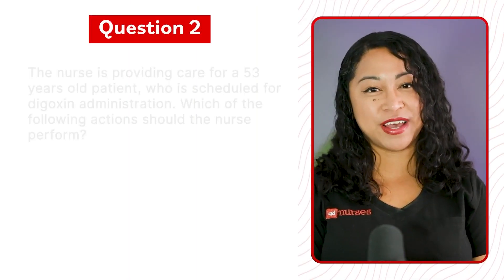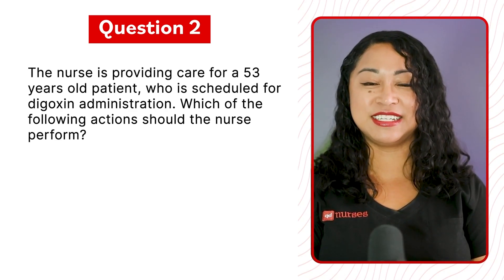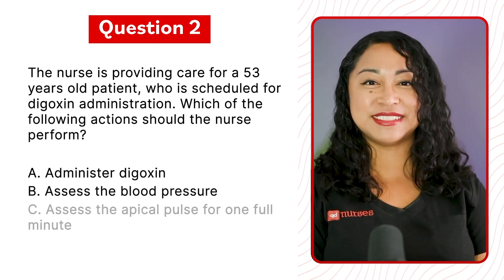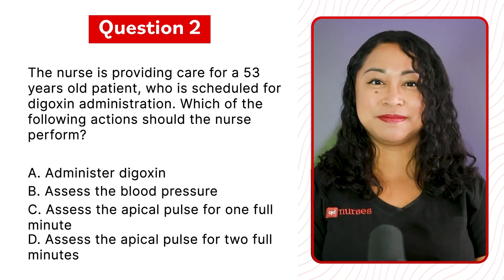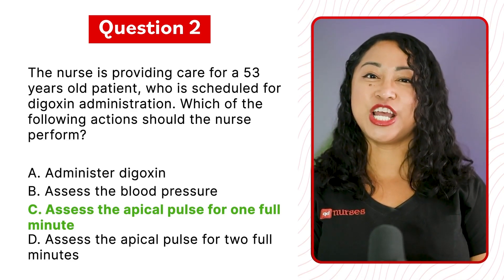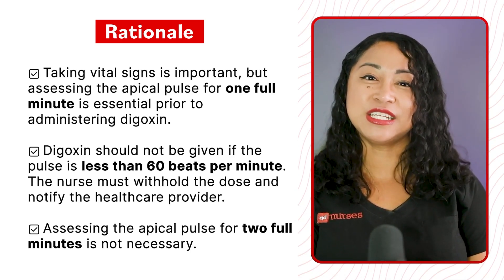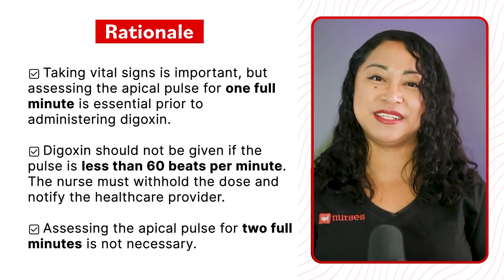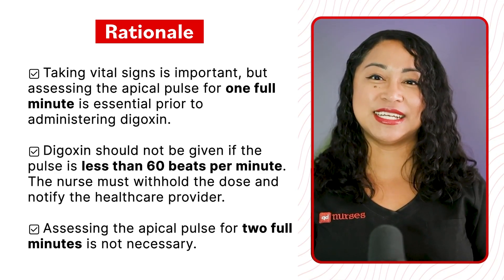Question 2: The nurse is preparing to administer digoxin to a 53-year-old patient. Which action should the nurse perform? A. Administer digoxin, B. Assess the blood pressure, C. Assess the apical pulse for one full minute, or D. Assess the apical pulse for two full minutes. The correct answer is C. Assessing the apical pulse for one full minute is essential prior to administering digoxin. Digoxin should not be given if the pulse is less than 60 bpm; the nurse must withhold the dose and notify the healthcare provider. Assessing for two full minutes is not necessary.